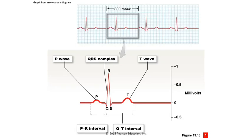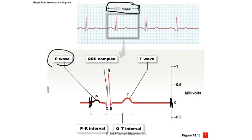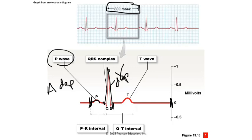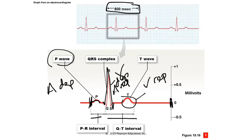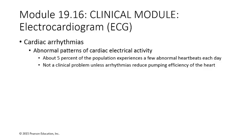A typical EKG spans 800 milliseconds per cardiac cycle — from the start of one P wave to the next. The small P wave represents atrial depolarization. The large QRS complex represents ventricular depolarization (and also masks atrial repolarization, which occurs simultaneously but is overcome in amplitude). The T wave represents ventricular repolarization. The y-axis shows millivolts — the amount of electrical disturbance measured by the EKG leads.